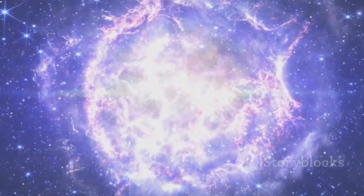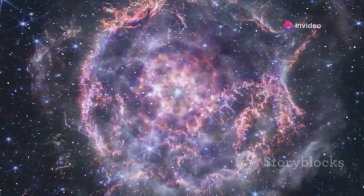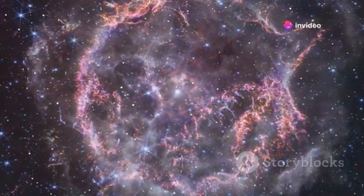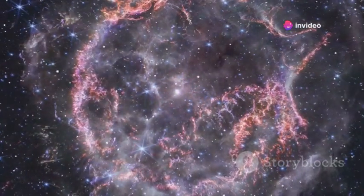A supernova is a cataclysmic event that marks the end of a star's life. When a star like Betelgeuse exhausts its nuclear fuel, it can no longer support its own mass. The core collapses under gravity, leading to a massive explosion that releases an incredible amount of energy. It's one of the most spectacular events in the universe. The explosion not only creates a brilliant burst of light, but also disperses elements like carbon, oxygen, and iron into space, seeding future generations of stars and planets.